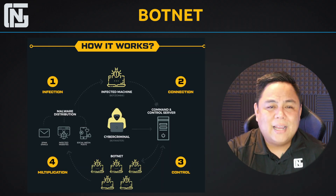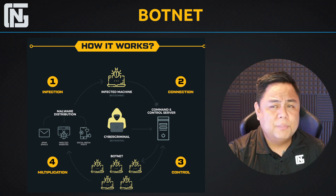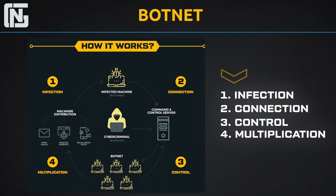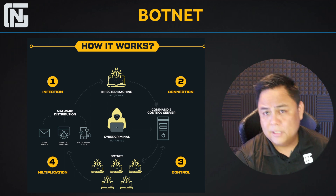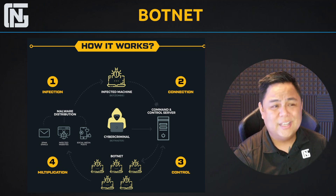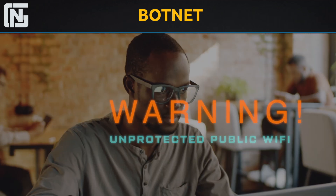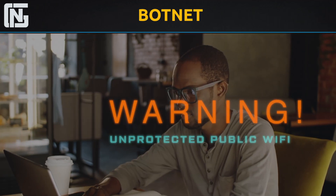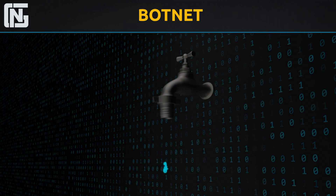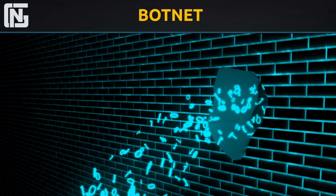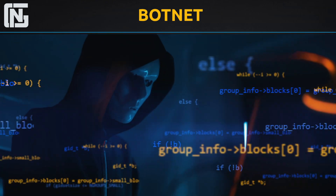So how exactly does a botnet work? A botnet essentially works in four phases: the infection, the connection, the control, and the multiplication phase. What happens initially is a user gets infected somehow — either that user is careless, or they were running a machine that was unpatched and had a vulnerability attached to it. After that computer gets infected, that computer becomes a zombie, or a bot.